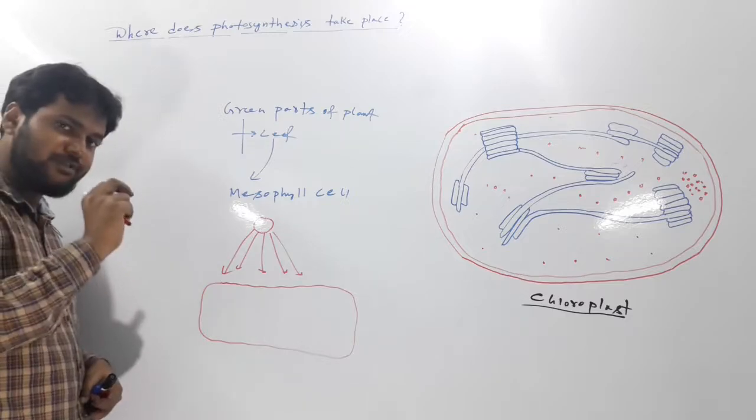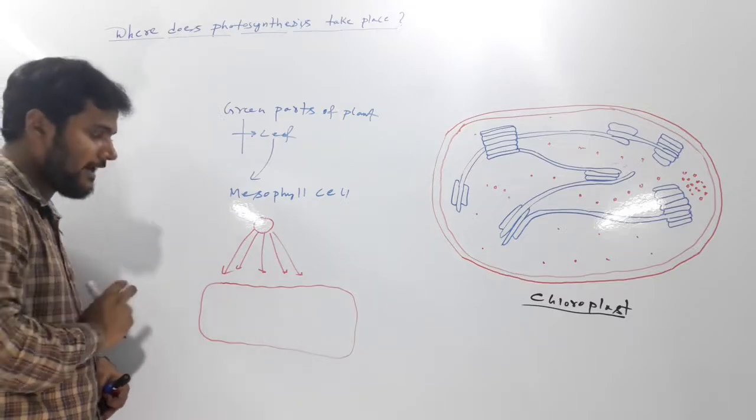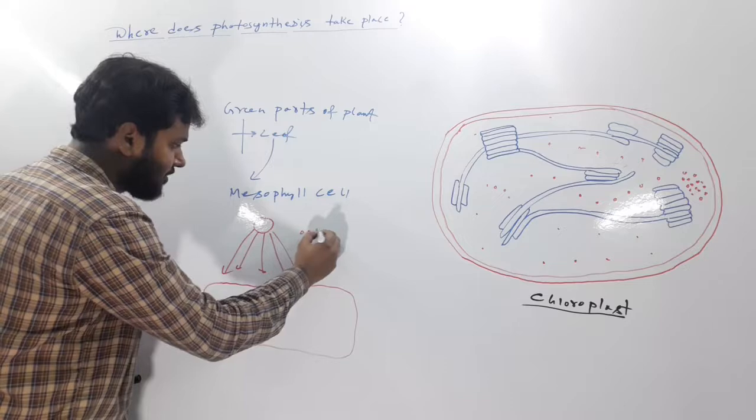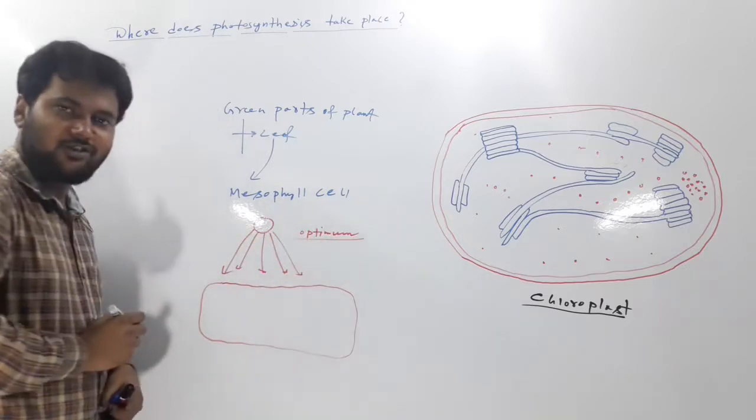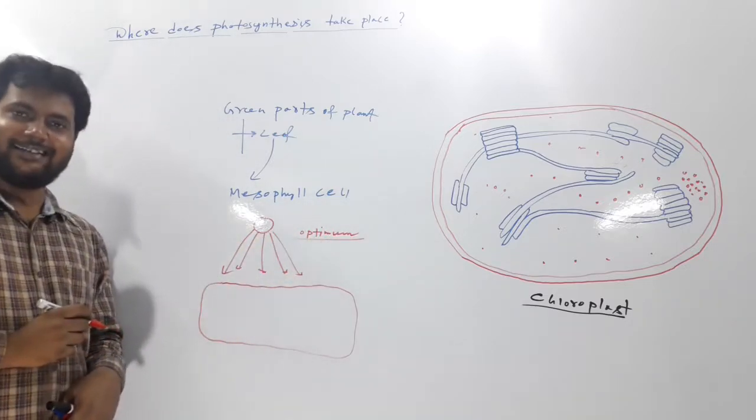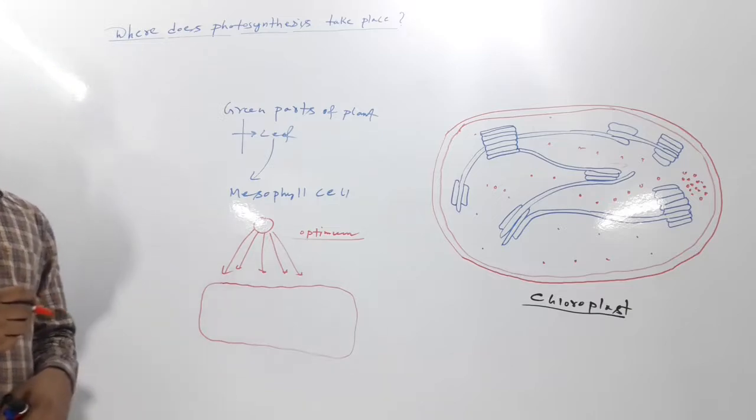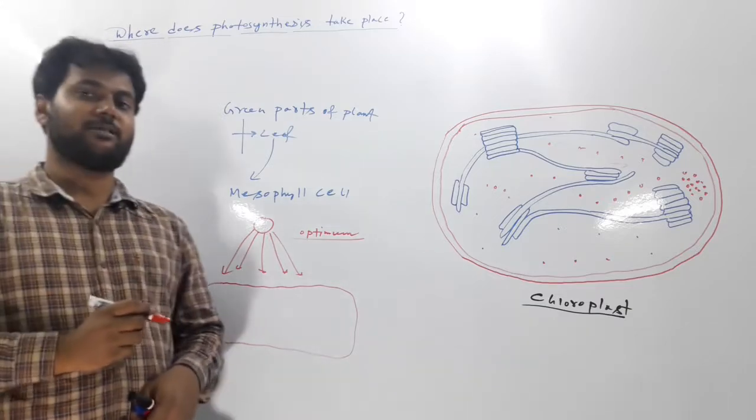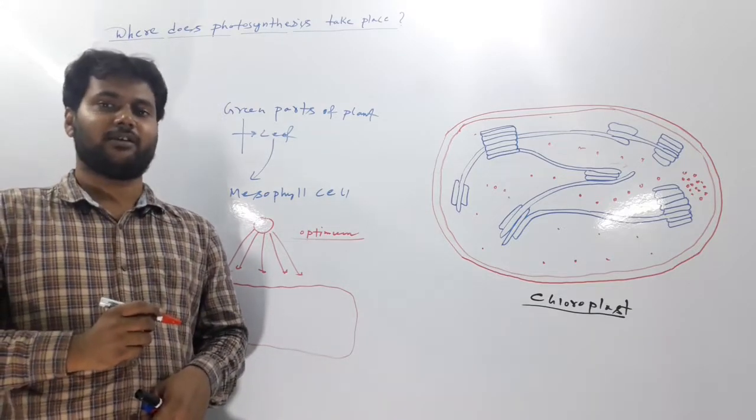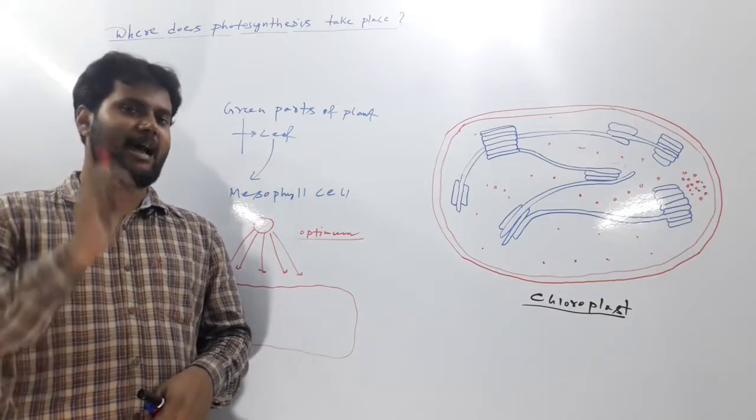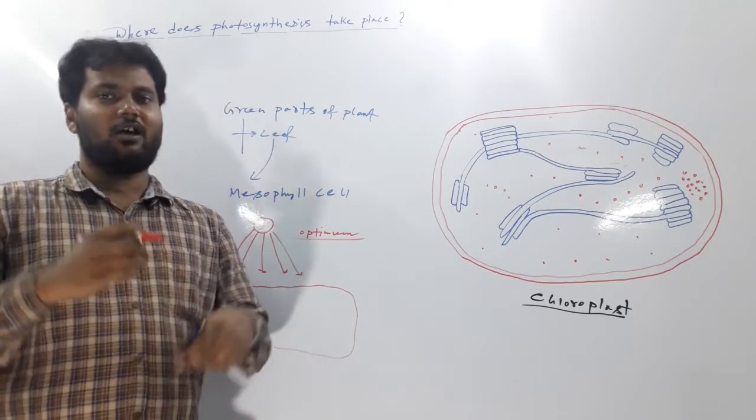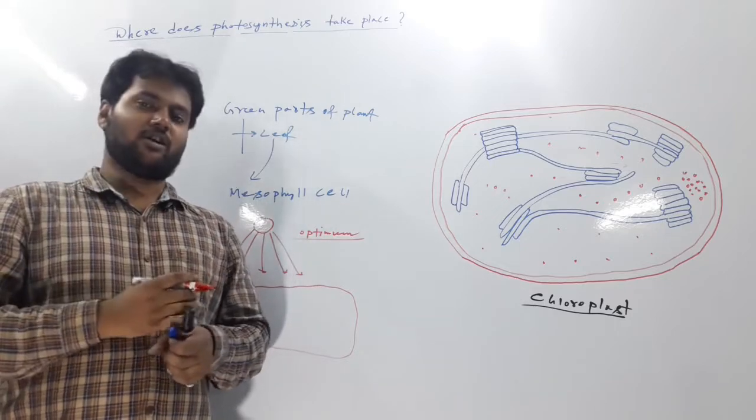They get the optimum amount of incident light. Remember the word optimum amount. It is not that they will be aligned to get the highest amount of light or highest amount of incident light. They will be aligned so that optimum light intensity for photosynthesis occurs.